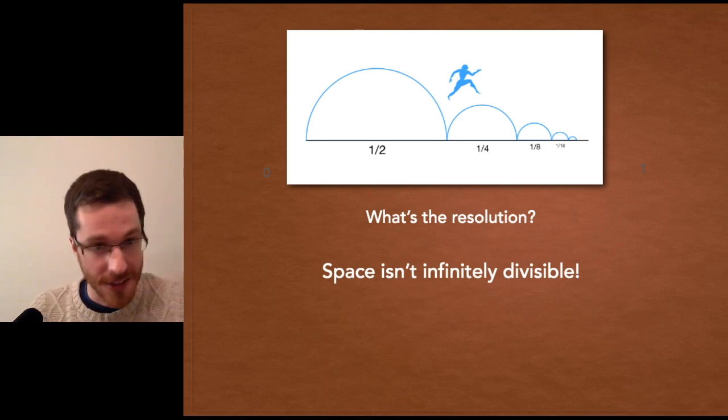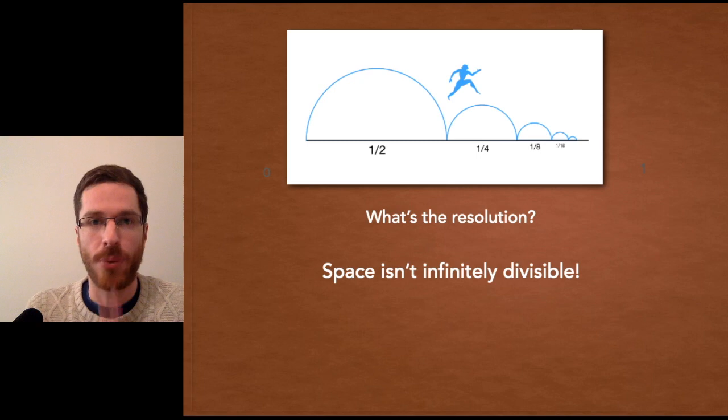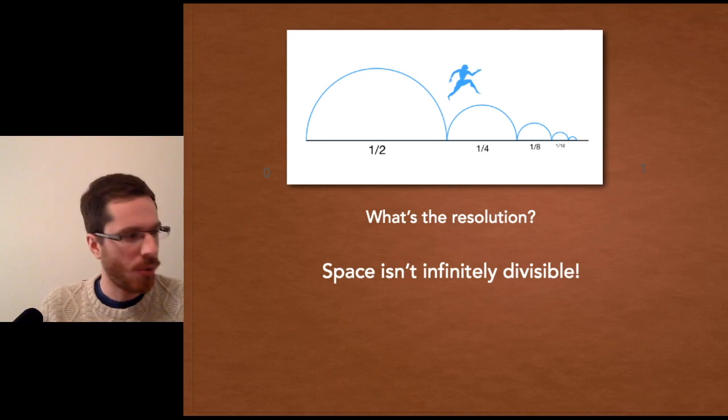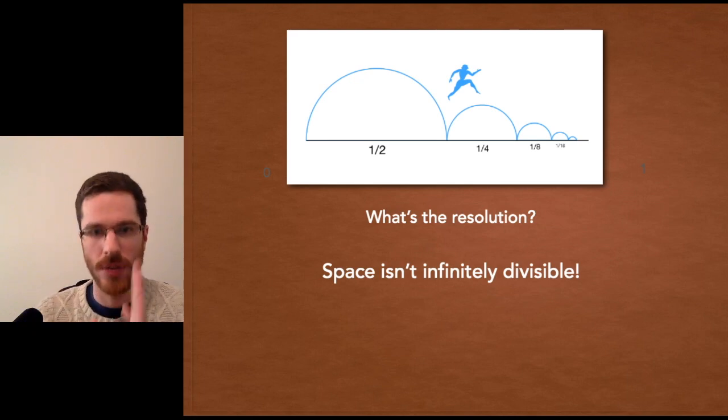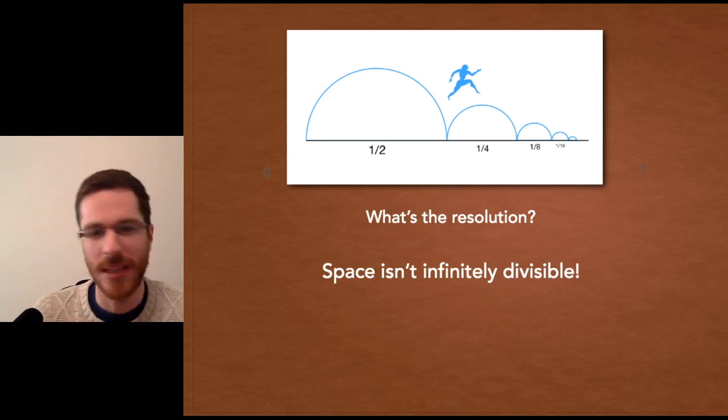One of the premises of this whole idea is that between any two points, there is a third point. There's a middle point. There's a halfway point. Well, if space isn't infinitely divisible, that's not true. At some point along that series, you get to the point that's right adjacent, right next to the endpoint. There's no middle point between them.